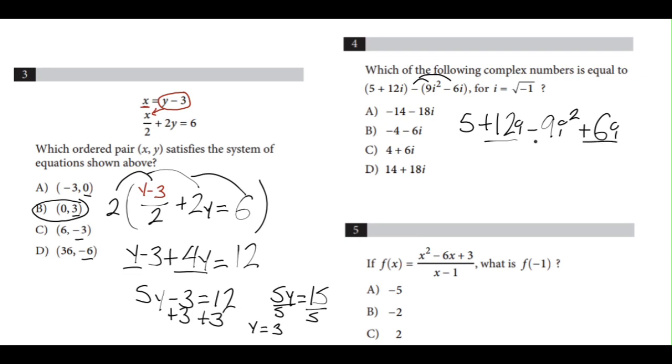We can combine like terms. 12i plus 6i is going to give us 18i, and i squared is negative 1. Here we have negative 9 times i squared, this will be negative 9 times negative 1. Negative 9 times negative 1 is positive 9, and we'll have 5 + 9 + 18i. 5 plus 9 is 14, plus 18i is answer choice D.